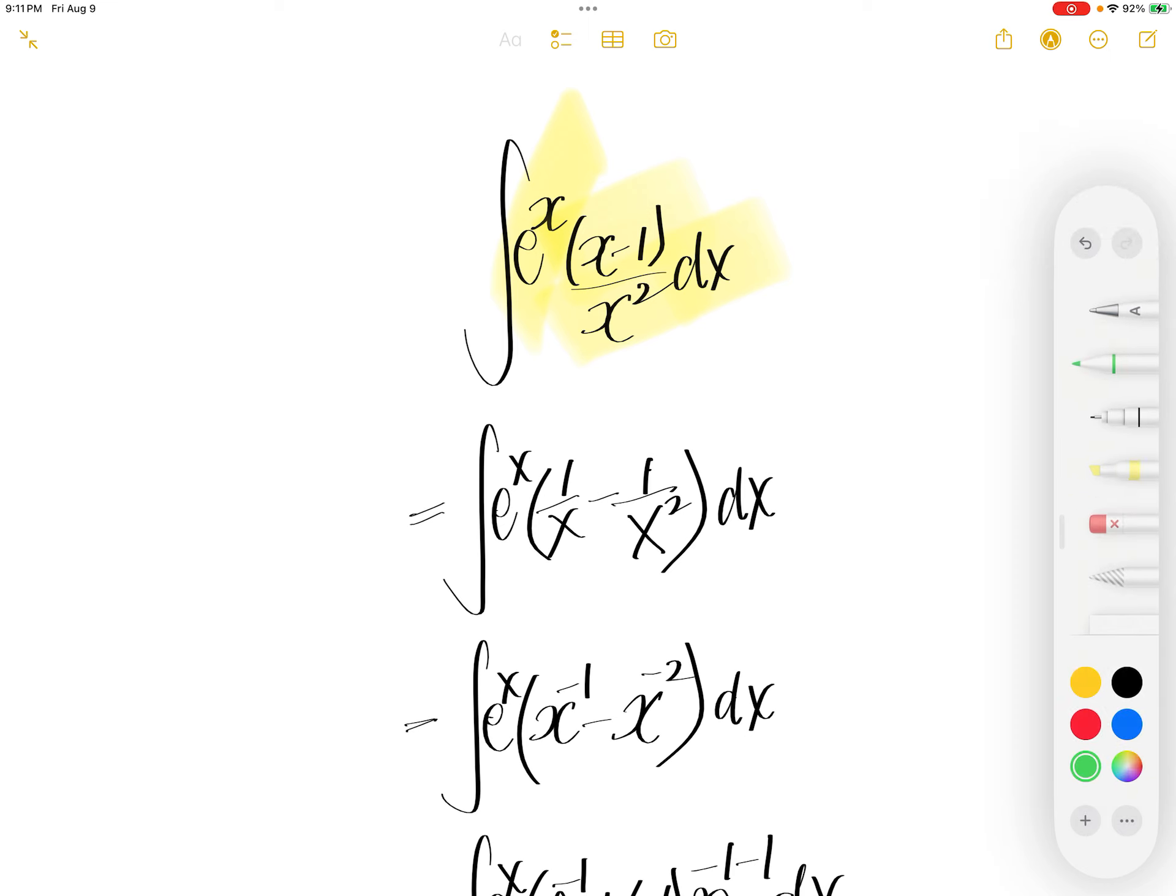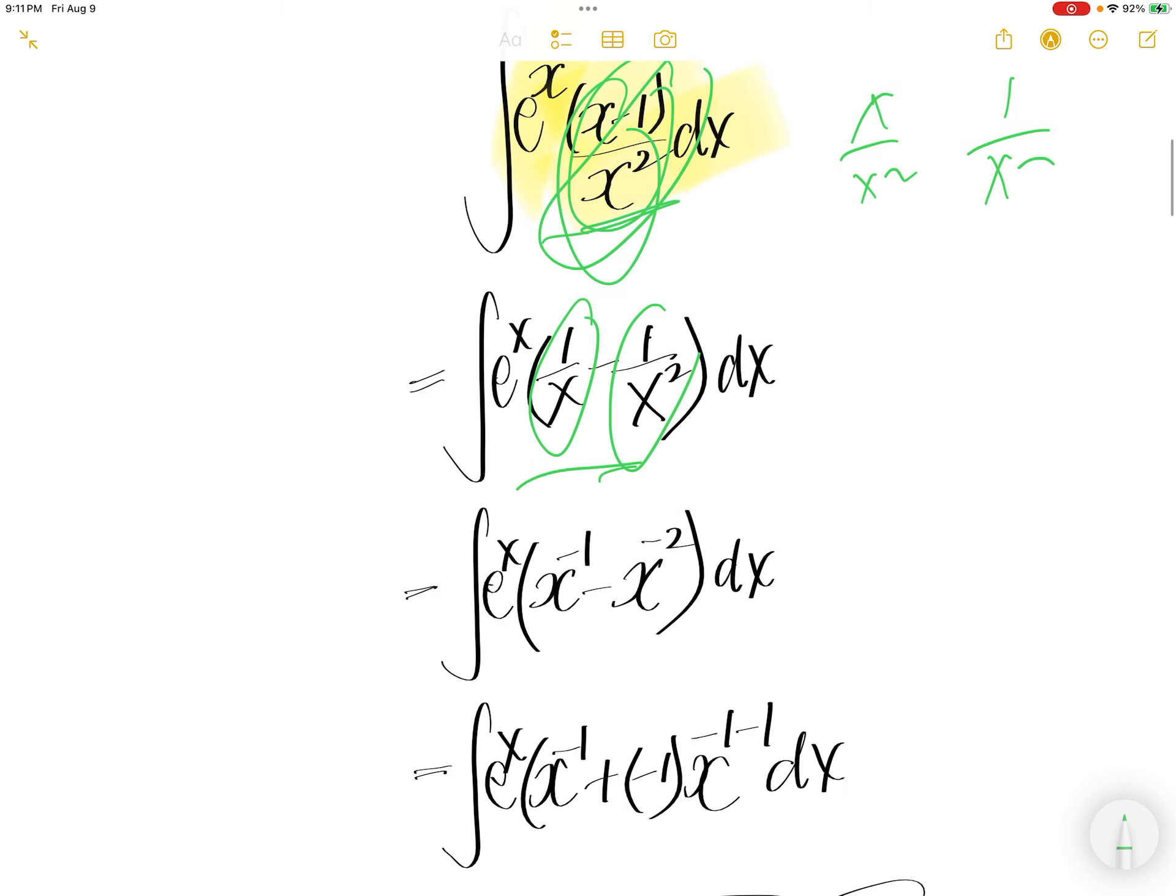First, we are going to write x minus 1 divided by x squared as 1 over x minus 1 over x squared. x divided by x squared is 1 over x, and then 1 over x squared is this piece. So there are two terms, one term followed by the second term.